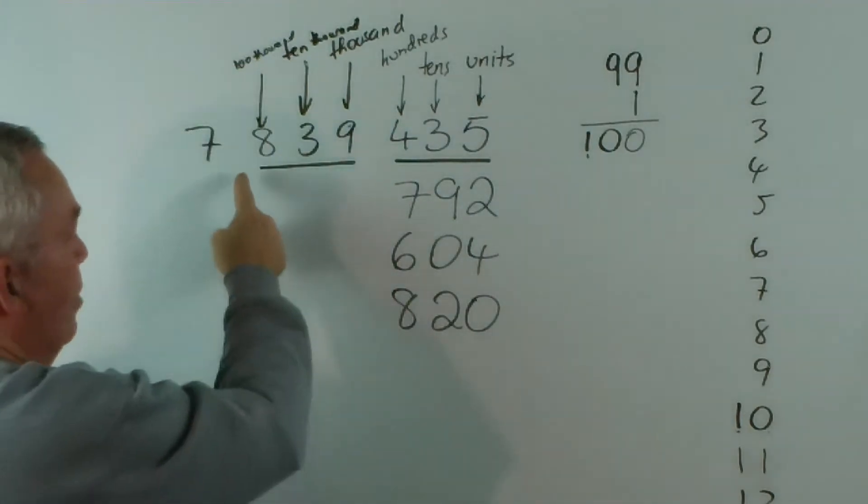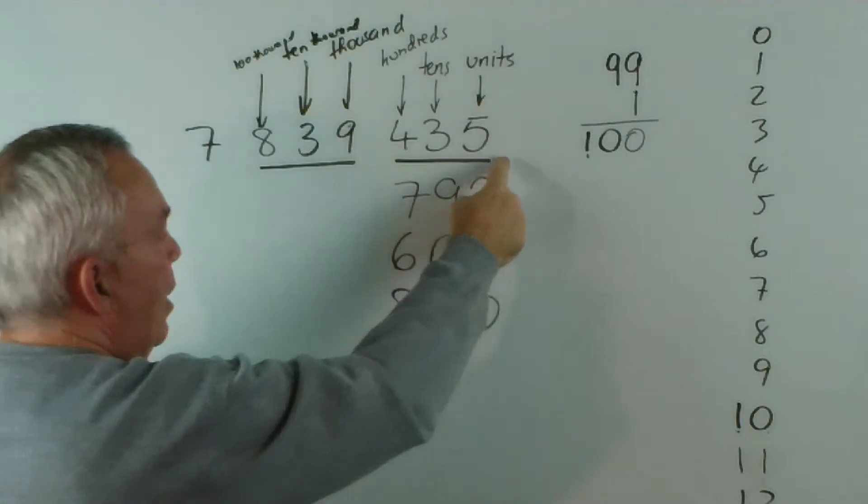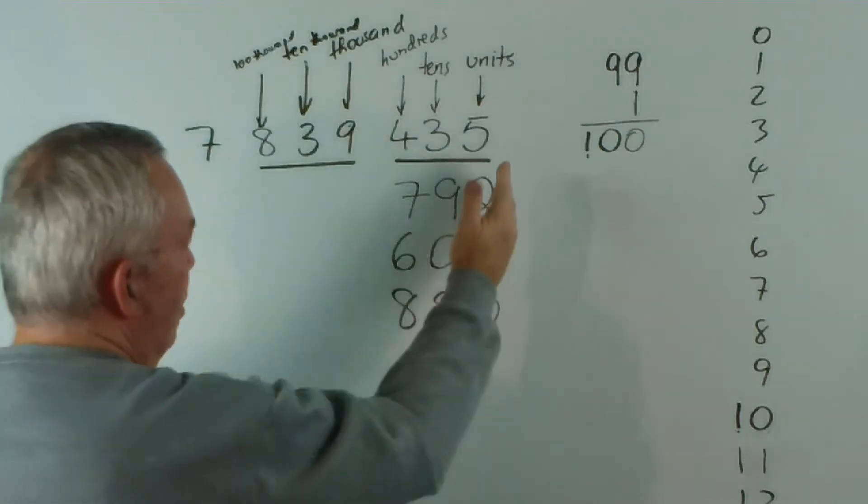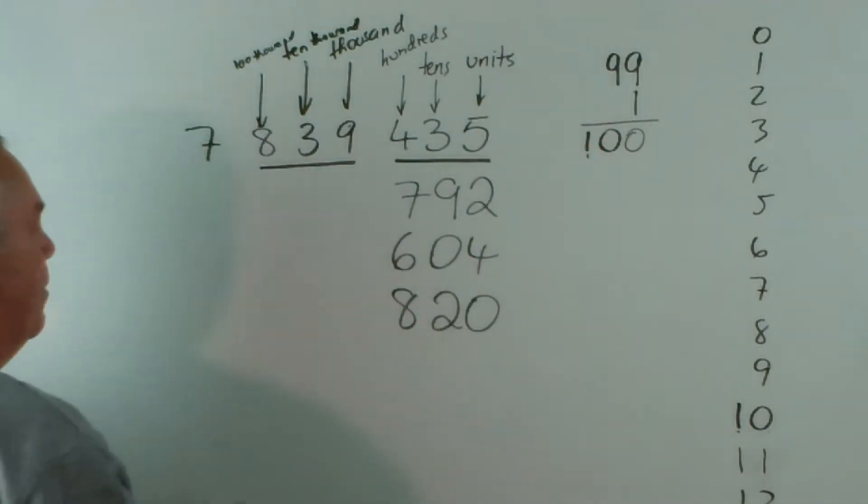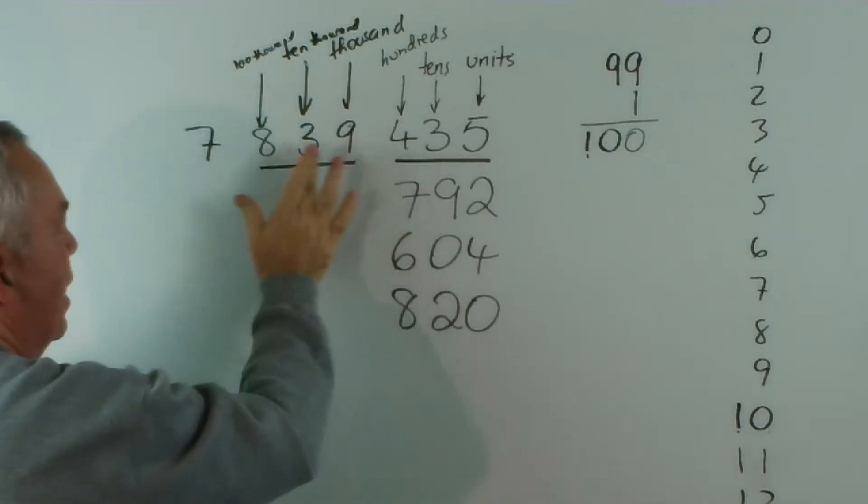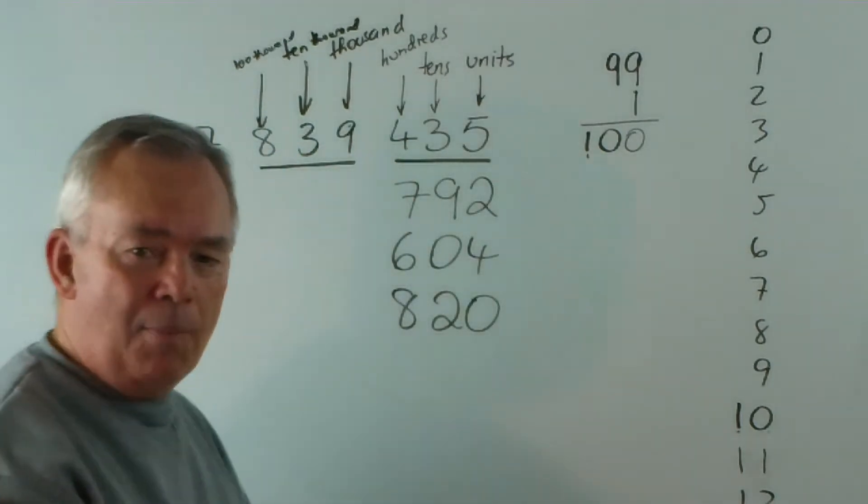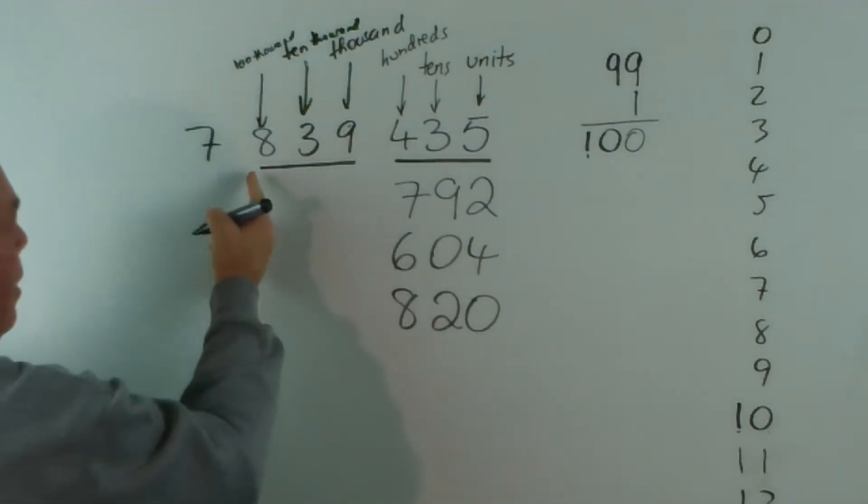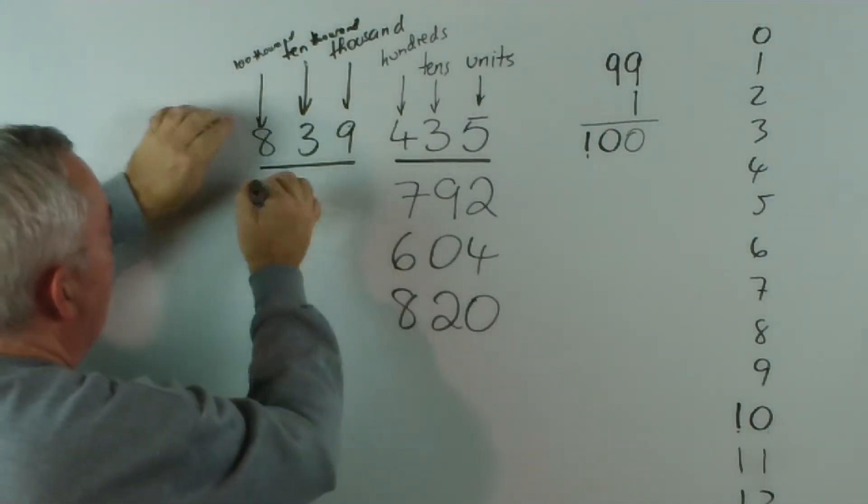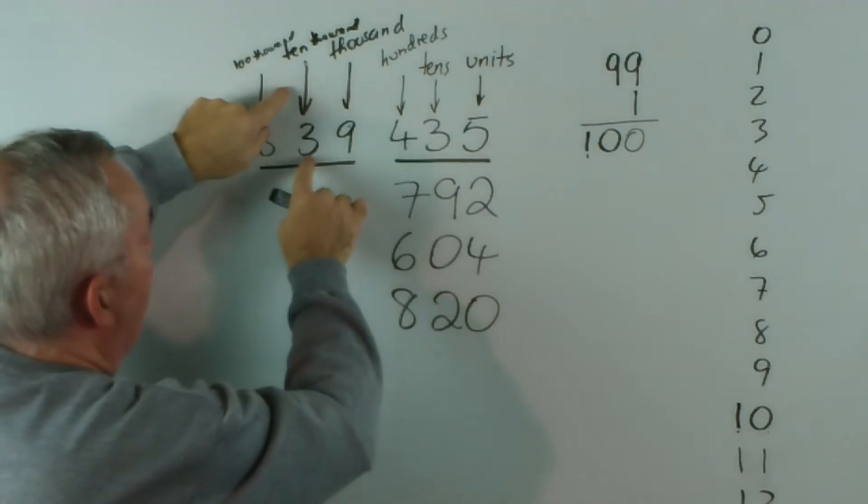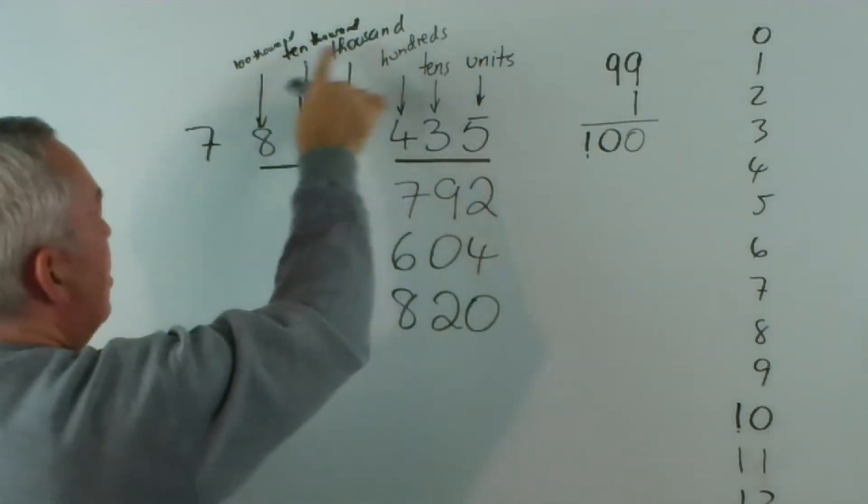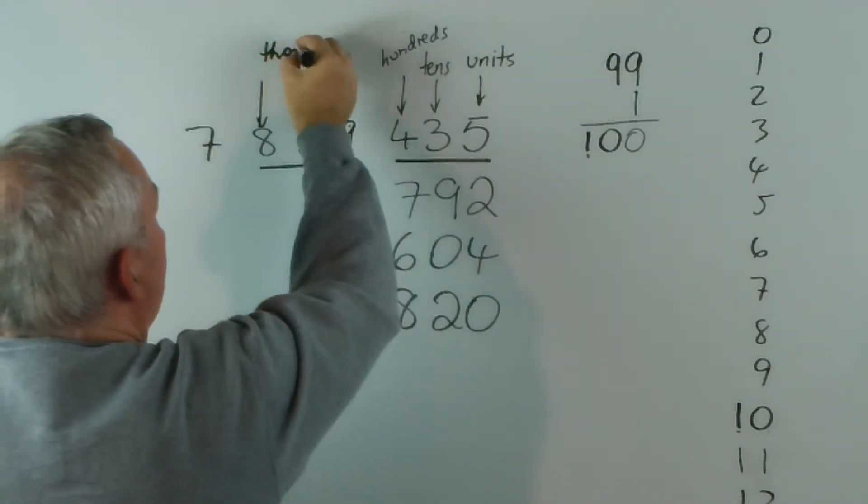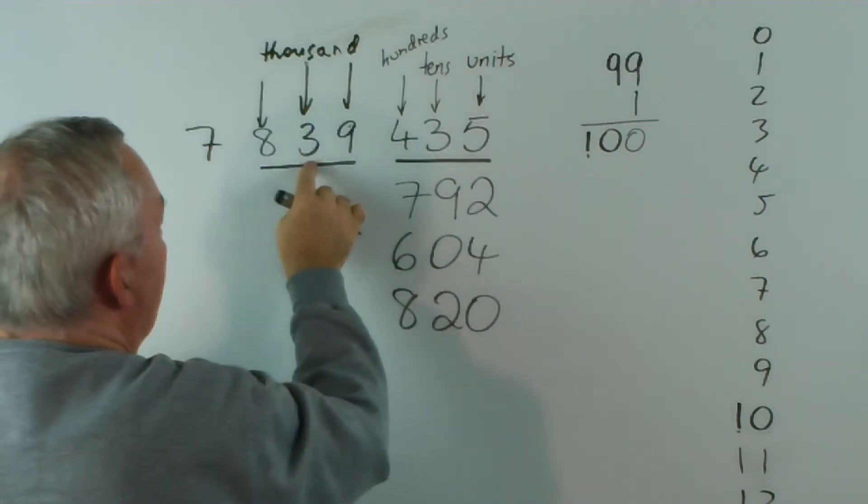Since the metric system has become pretty universal around the world and the SI system, the System Internationale, has become pretty much standard, they frown on this and they say, really, they should be left blank. There was a time that people were actually putting periods or full stops here and commas for a decimal point. So we had quite a confusion. The International Standard now is just to leave a gap, although a lot of people ignore it and still use commas or periods.